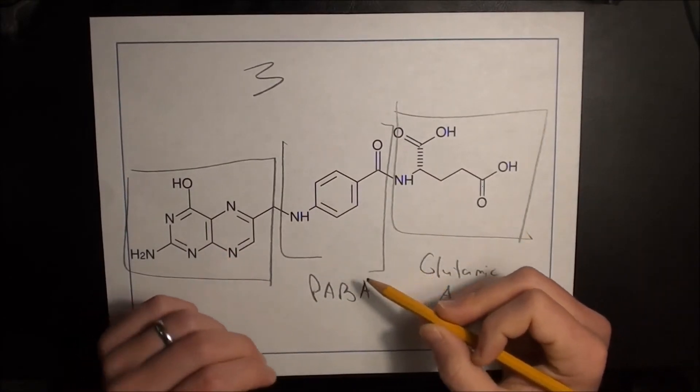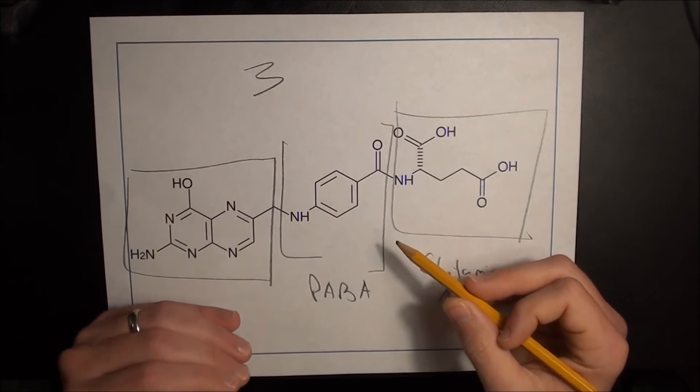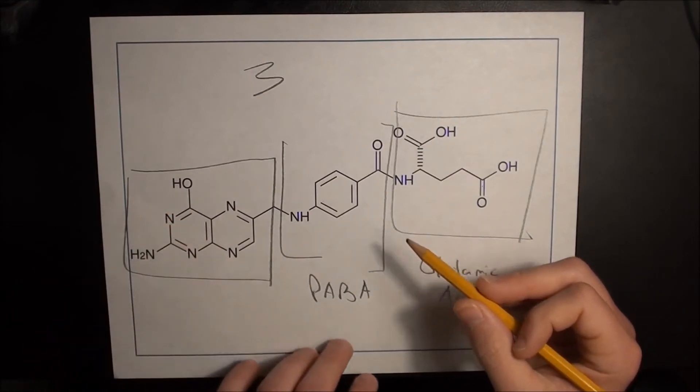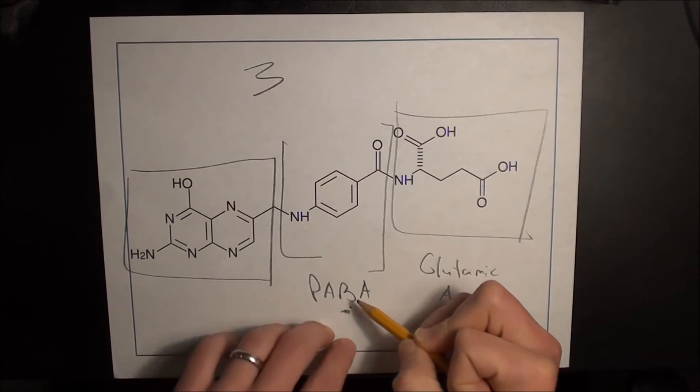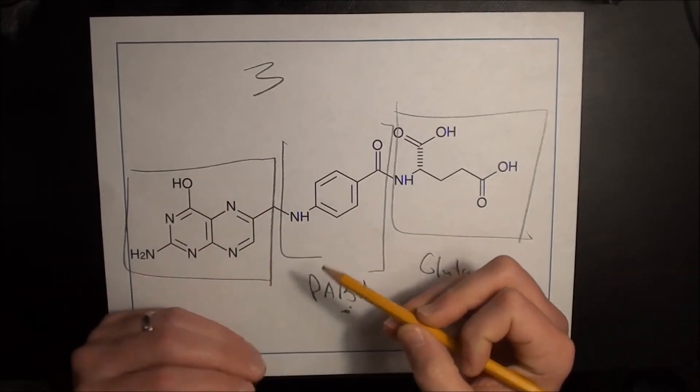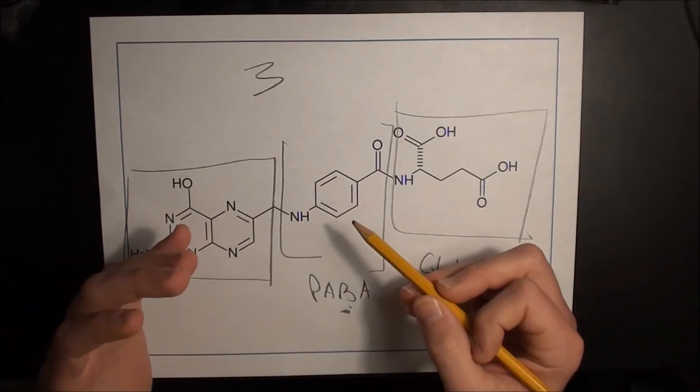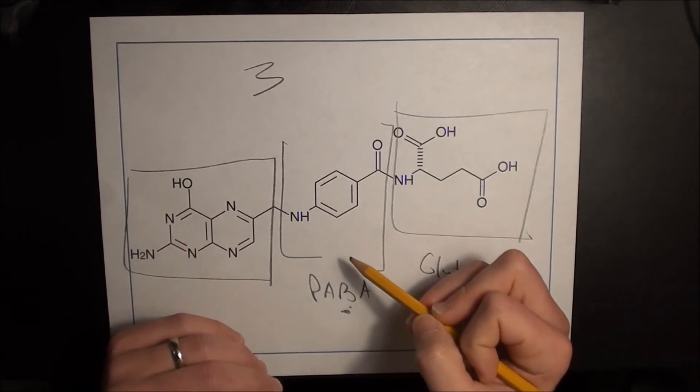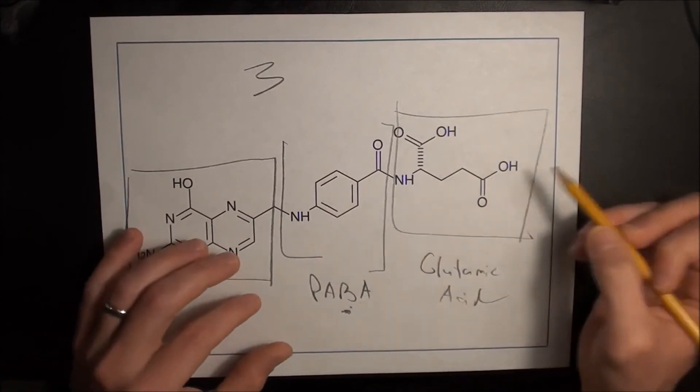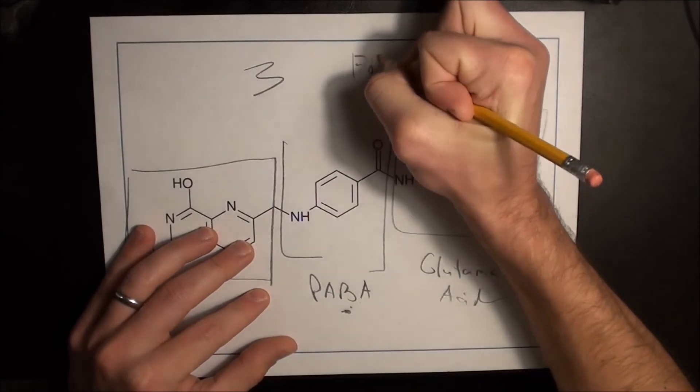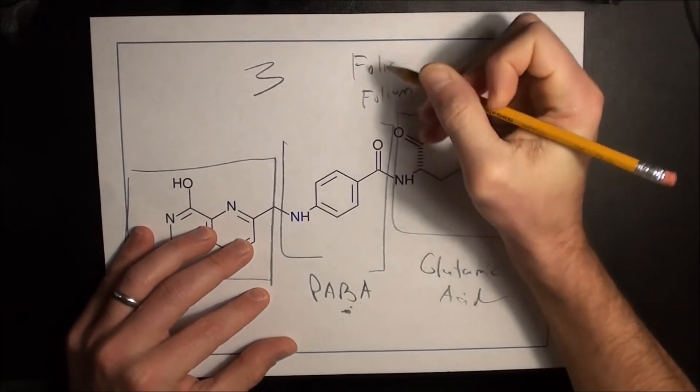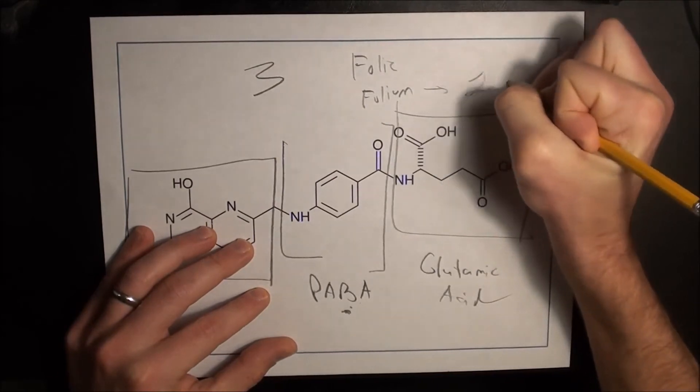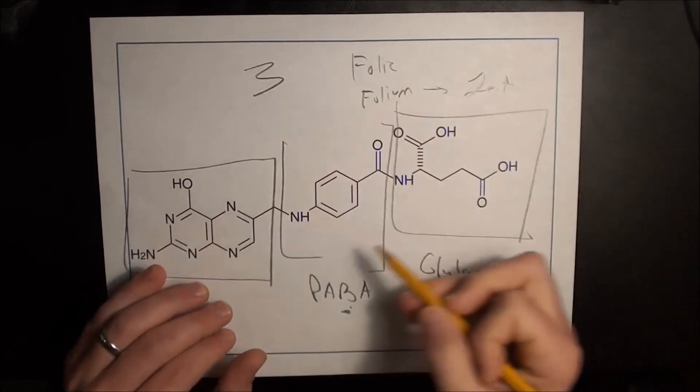So as it turns out, in nature, plants, fungi, and bacteria use PABA to create folic acid. And that's why green leafy vegetables like spinach are such a great source of folic acid in the diet. Indeed, the name folic acid comes from the Latin folium, which means leaf. So that's how it's all connected.